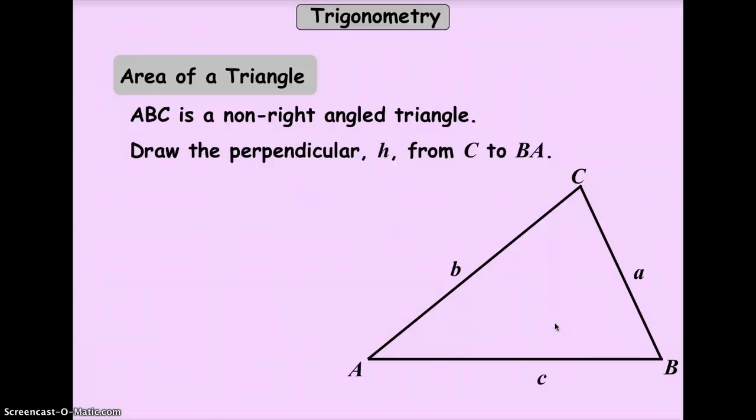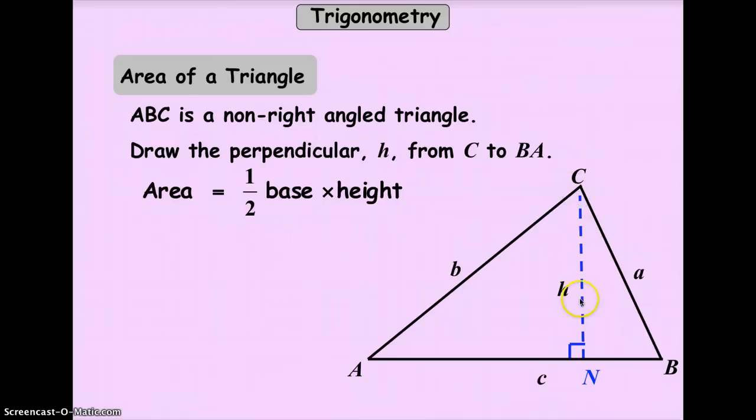Let's draw a perpendicular line from point C, your point C is here, down to side AB or what we call side c. Let's have that perpendicular line and that perpendicular line will make a 90 degree angle. Let's call this new line h. That would refer to height because this line will be the height of the triangle.